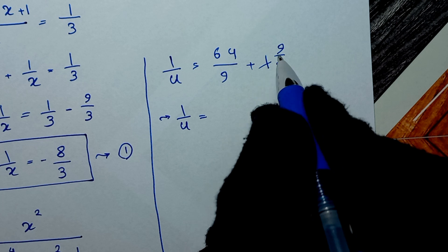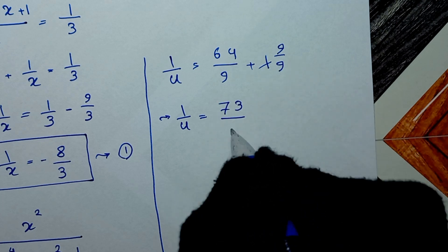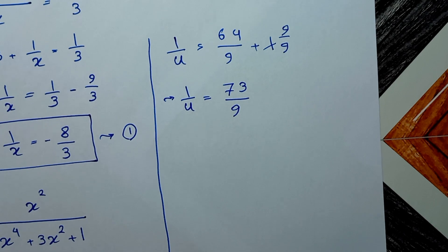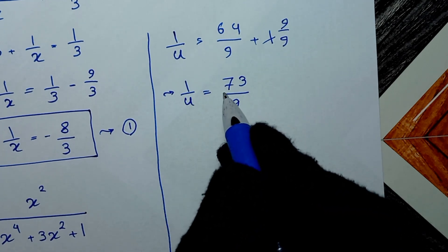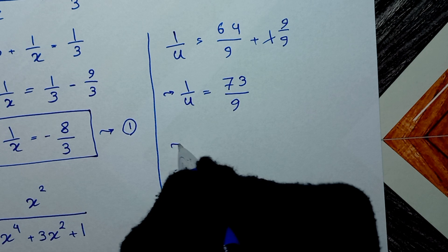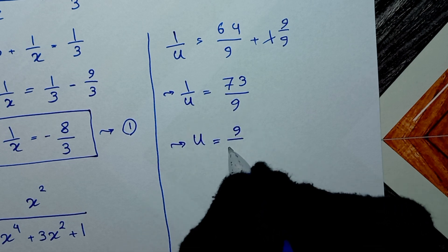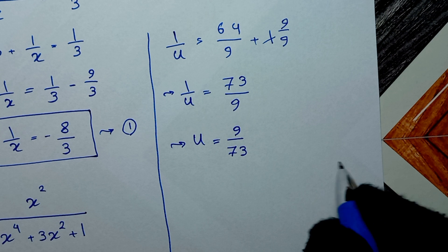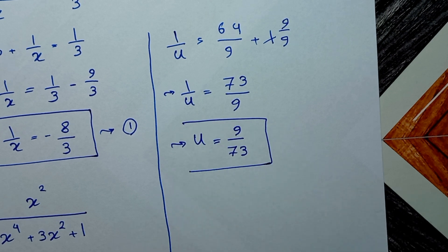Therefore 1 over u is equal to 73 over 9. Reversing both sides gives u equal to 9 over 73, and this is our final answer. Thank you for watching — don't forget to like and subscribe, see you in the next video!